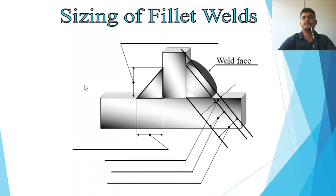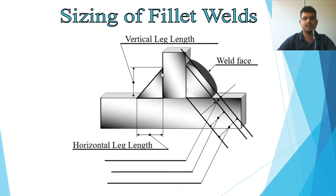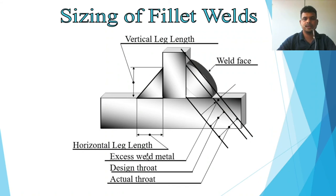For fillet weld configuration: the weld face is the outer surface; the horizontal and vertical leg lengths run from corner to weld toe on each side; the design throat thickness is measured from the root to the weld face at the midpoint. As with butt welds, there is excess weld metal or reinforcement, and actual throat thickness runs from bottom to top.